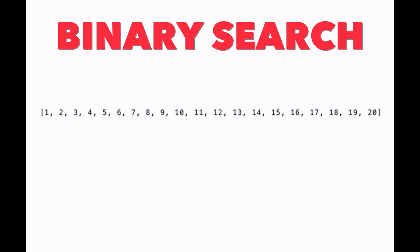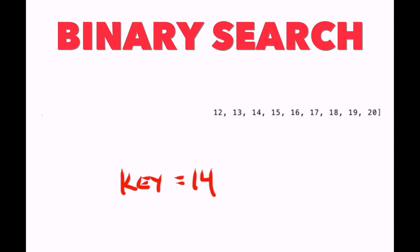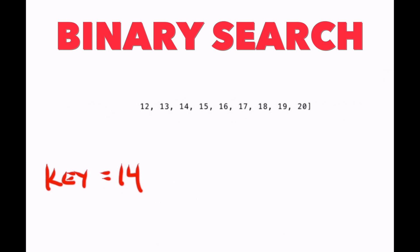So let's say the value we're looking for is 14 — let's call that key, key equals 14. The first step of binary search is you want to find the value at the midpoint of the array. For this illustration, let's call that 11. So you compare 14 with 11; 14 is greater than 11. Because binary search only works on sorted arrays, we know that we can get rid of the entire left-hand side of this array — everything below 11. So now we're working with an array half the size.